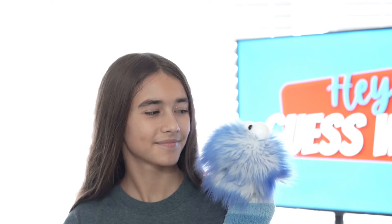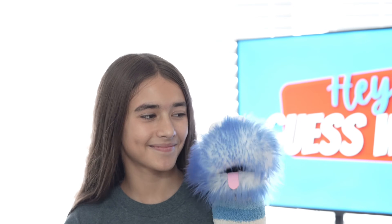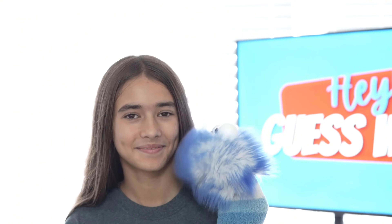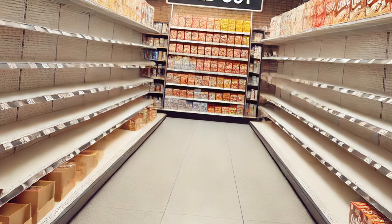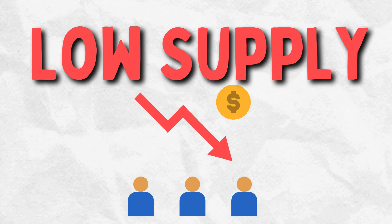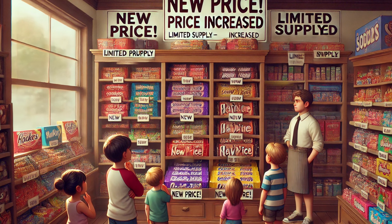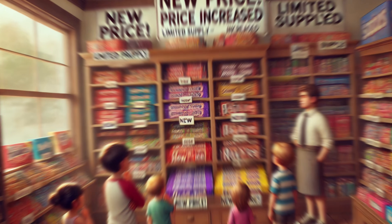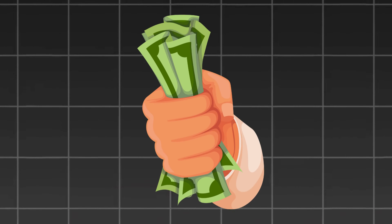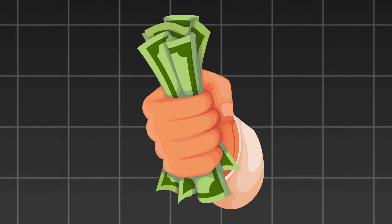So what happens now? Well, now the store only has a few chocolate bars left — this is called low supply. And lots of kids want the new chocolate bars, which is called high demand. So now the store might raise the price because they know the kids will still buy them even if they cost a little bit more.